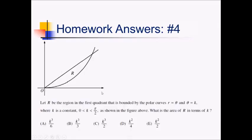For this no-calculator problem, we're told that R is the region in the first quadrant bounded by the curves r equals theta and theta equals k, where k is a constant between 0 and pi over 2. We want the area of big R in terms of k. Theta equals k is just a constant — a line going along one of these angle rays. r equals theta you might recognize as the spiral of Archimedes; this is just a small piece of that. Using our polar area formula, we have integral from a to b of 1 half r squared d theta.